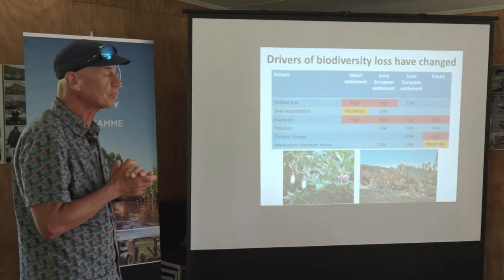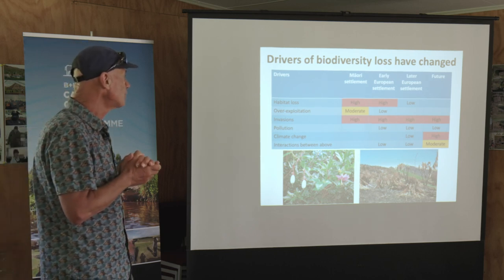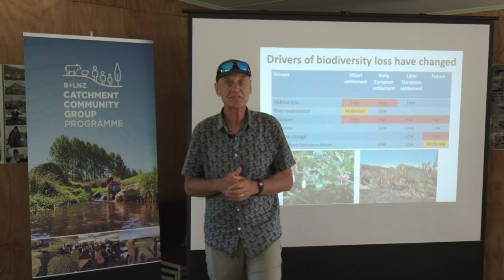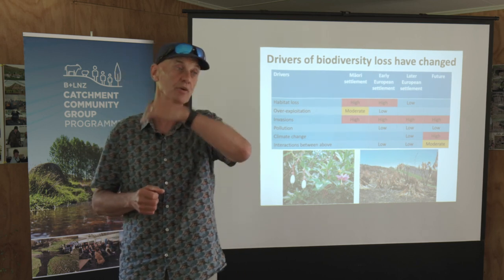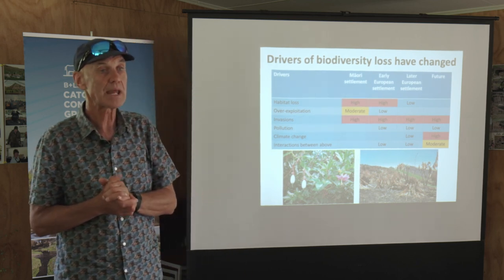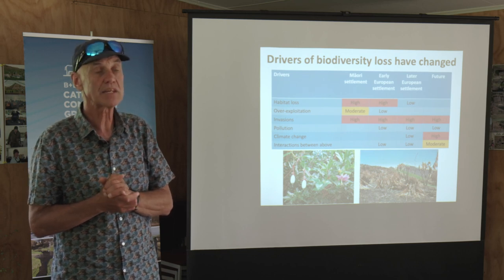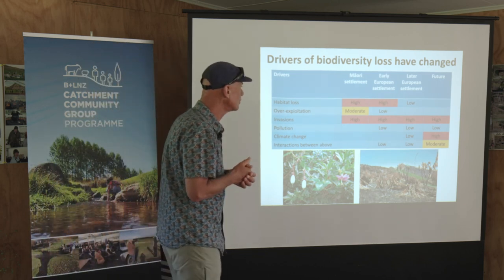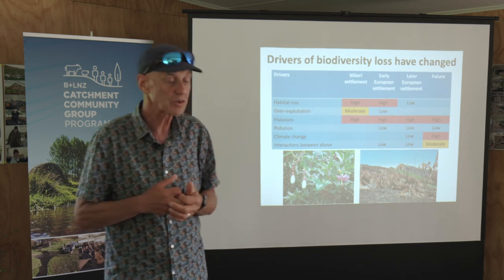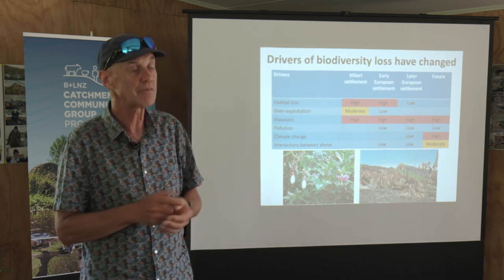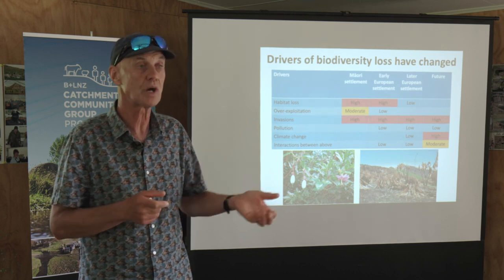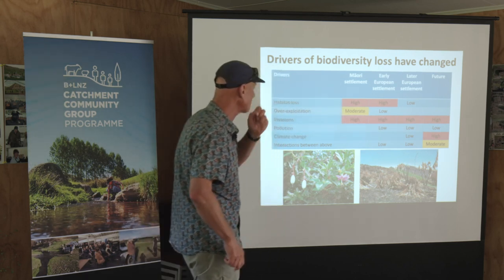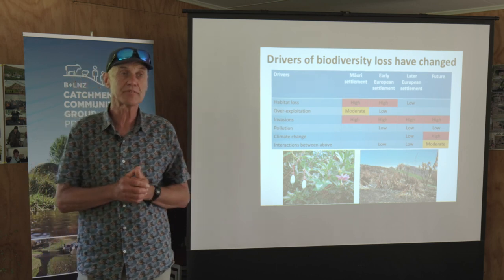We see changes in what's been driving biodiversity loss through time. With Māori settlement and early European settlement, we had a lot of habitat loss. We had extensive fires in the east and south island — certainly from Dunedin northwards through Canterbury into Marlborough. With early Māori settlement, we had massive fires that just destroyed everything. With early European settlement we had huge fire as well — Banks Peninsula lost its forest cover over about 30 years, with trees felled to build Christchurch and other settlements. We also had, with both Māori settlement and early European settlement, quite substantial impacts of invasive species.